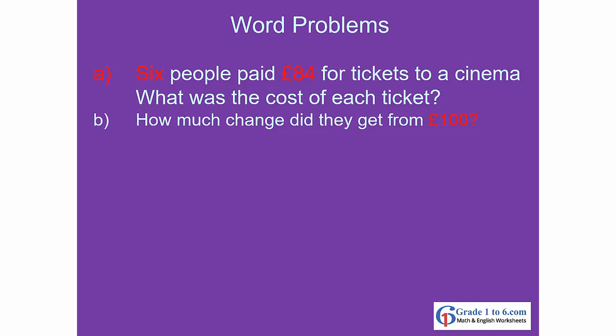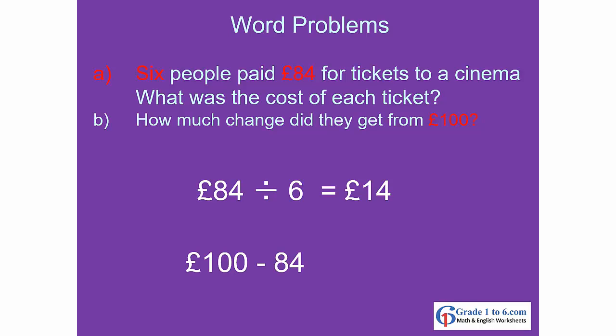Six people paid £84 for tickets to a cinema. What was the cost of each ticket, and how much change did they get from £100? 84 divided by 6 gives us £14 per ticket. Then 100 minus 84 gives you £16 change.